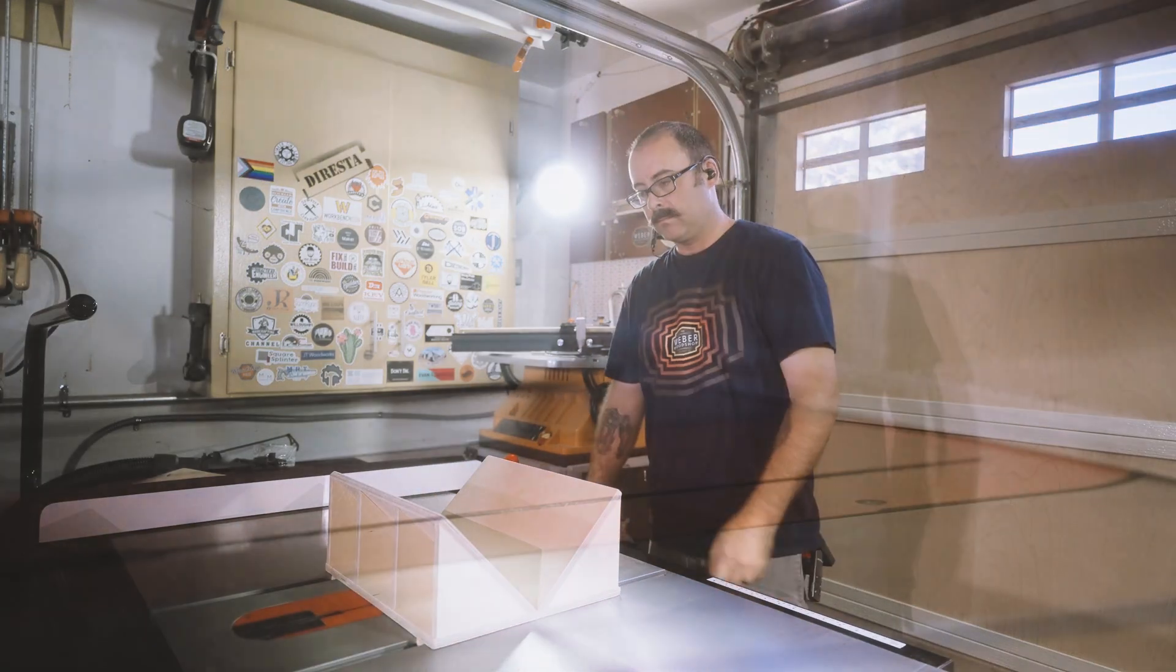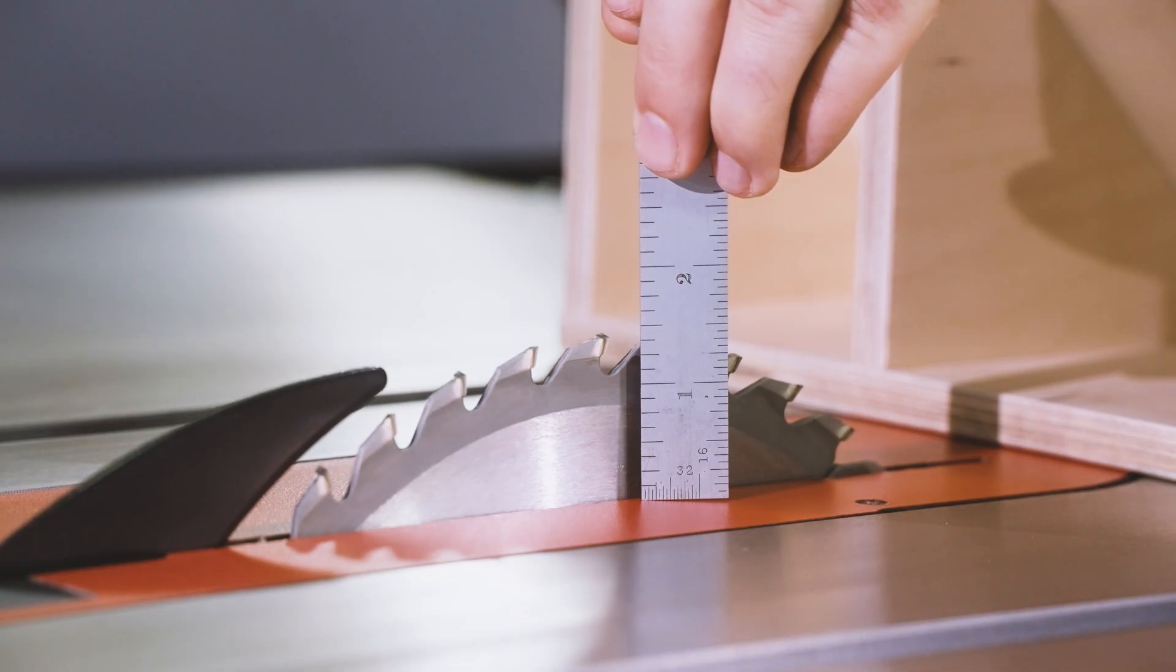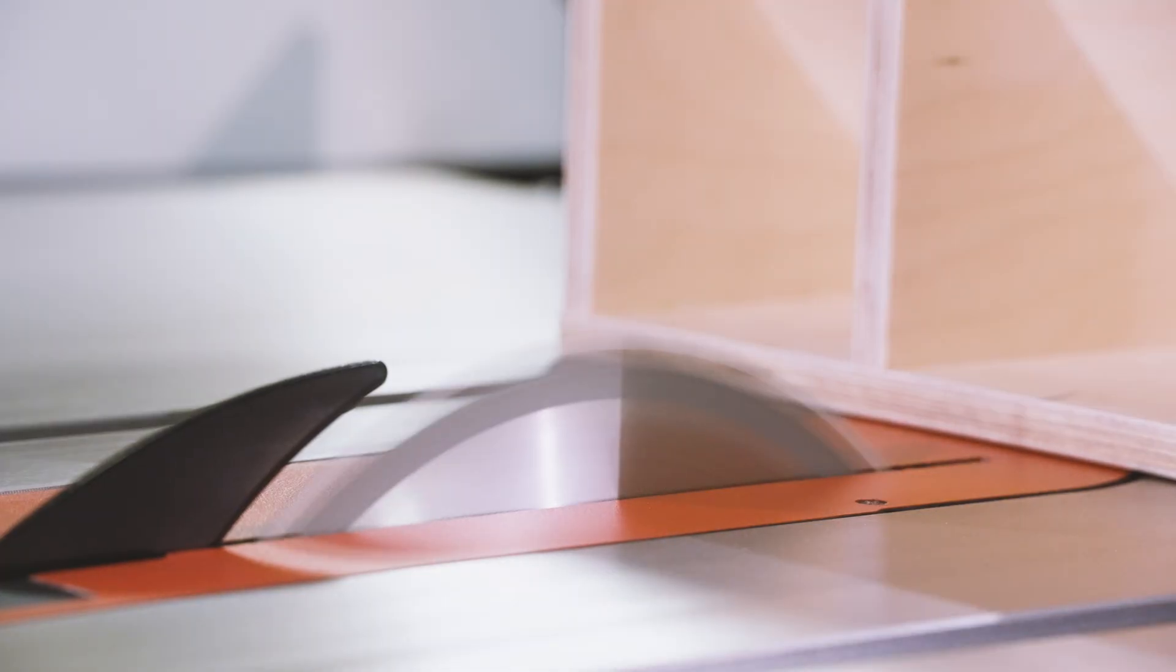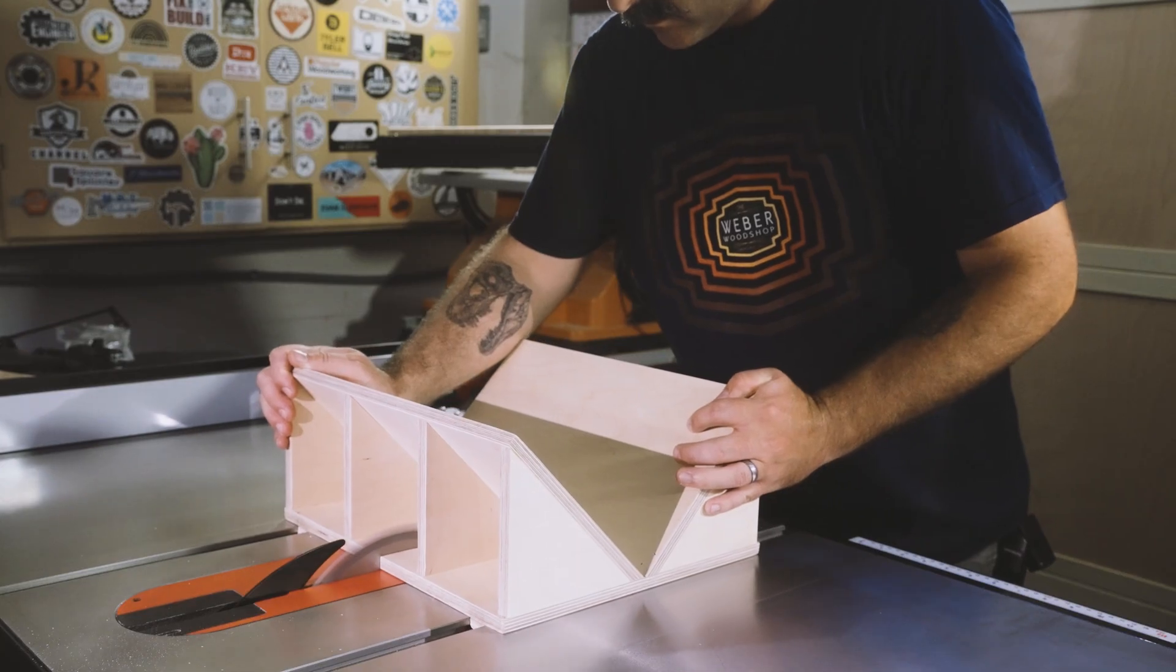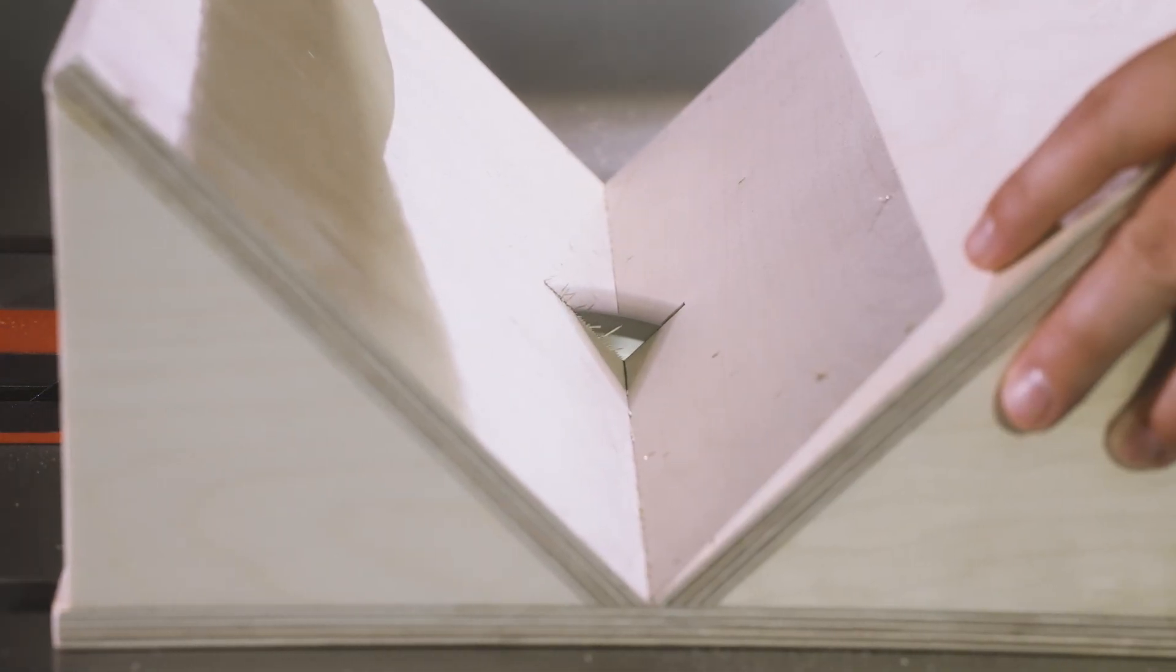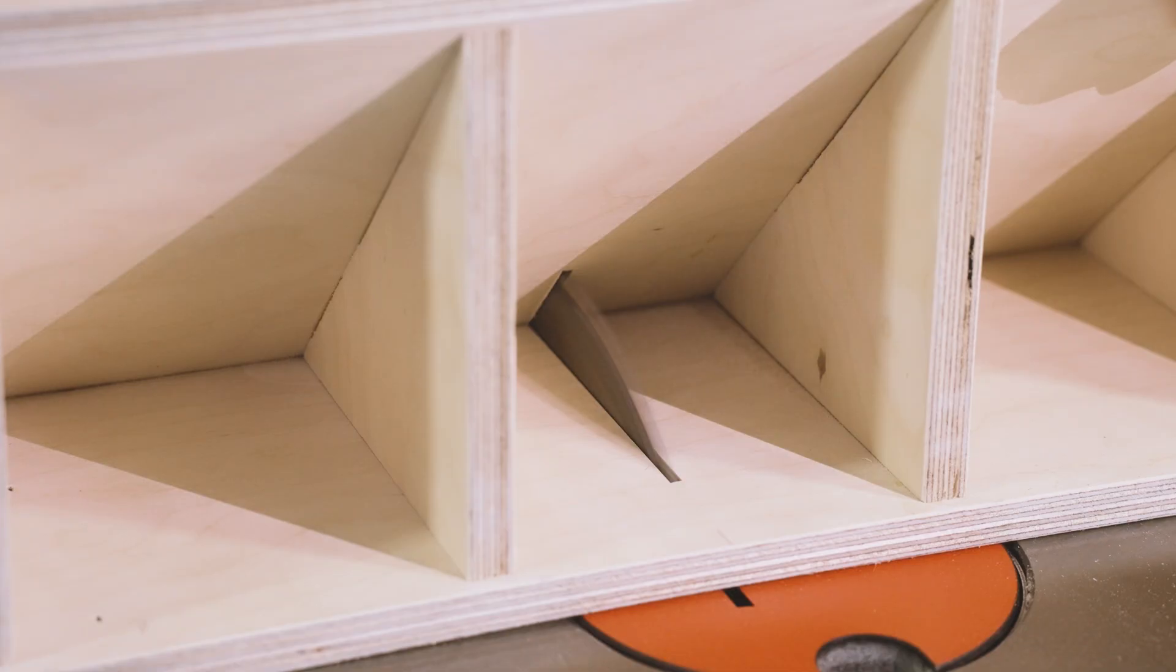With our jig back on the table saw, raise the blade about an inch and a half. And then slowly start cutting through, but make sure you stop before you cut all the way through the jig.